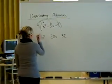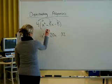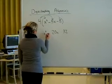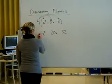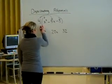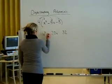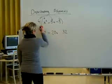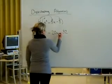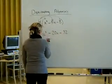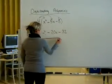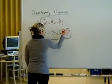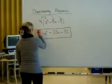Now we'll do the signs. Positive times a positive is a positive. Positive times a negative is a negative. The answer is 4x squared minus 20x minus 32.